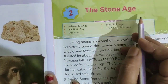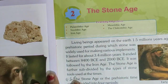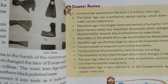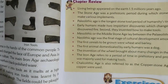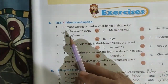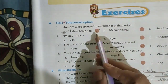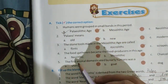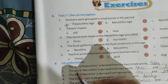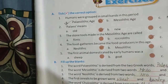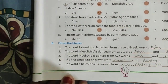Now next, chapter 2: the stone age. Mark the question answers that you have to write. First, tick the correct option — all 5. Fill up the blanks — that also all you have to practice.